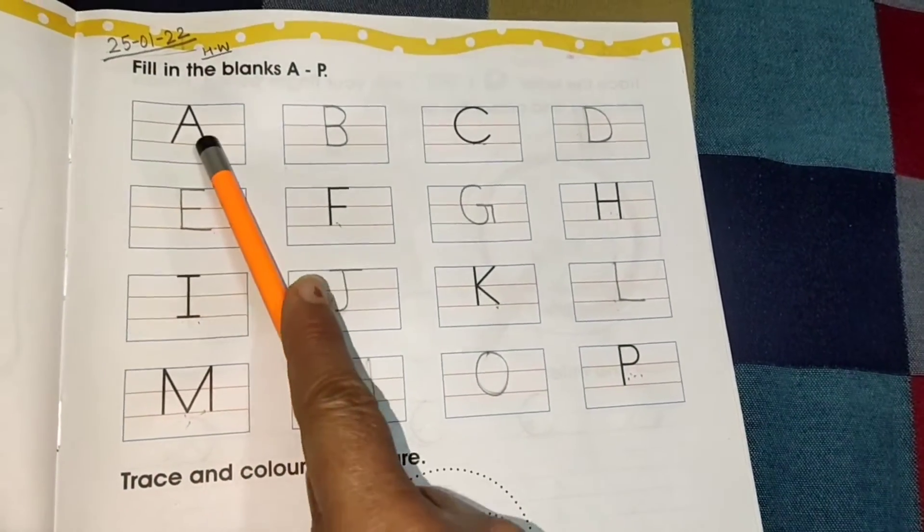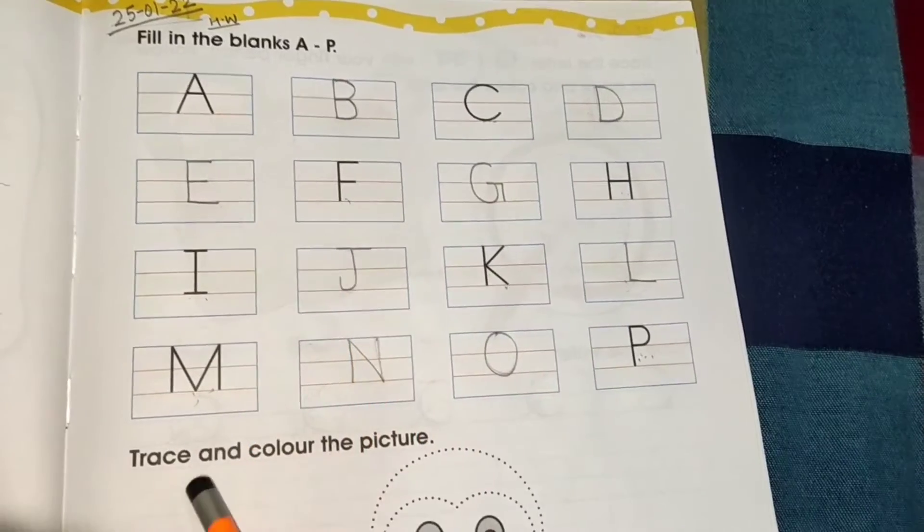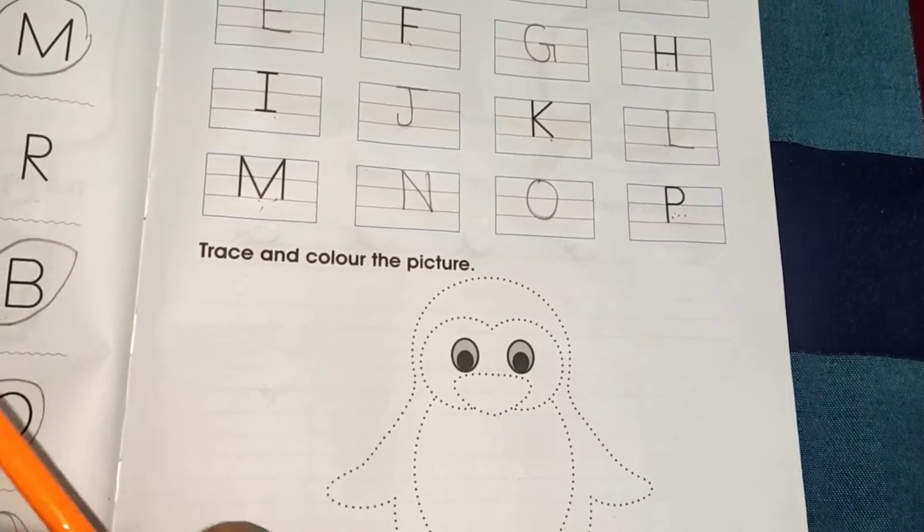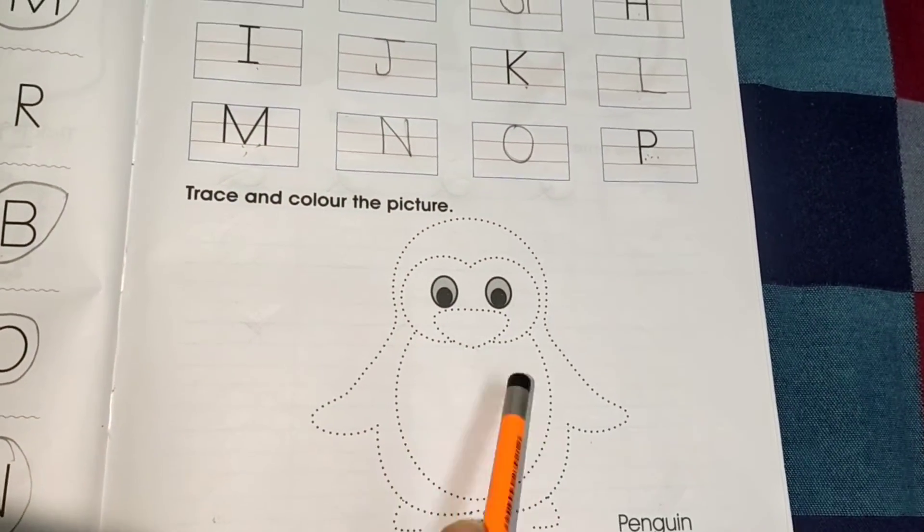So, is tarah se hume A to P tak complete karna hai. Okay. And look here. There is one activity also. Trace and color the penguin.